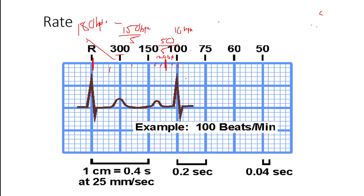If it lands in the 75 to 60 interval — a difference of 25 — each small box represents 5 beats per minute. If it landed here, that would represent a heart rate of 80; if it landed here, 95. So it's a quick and dirty way of assessing heart rate with a little bit of mental math. I would really recommend remembering: 300, 150, 100, 75, 60 — the rule of 300.